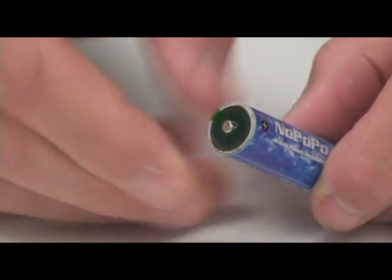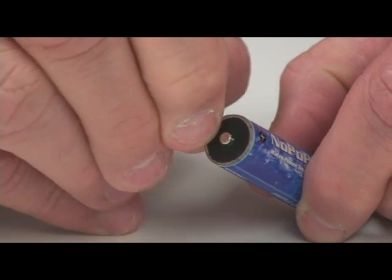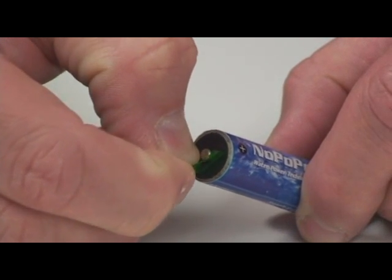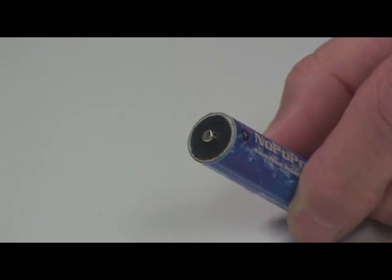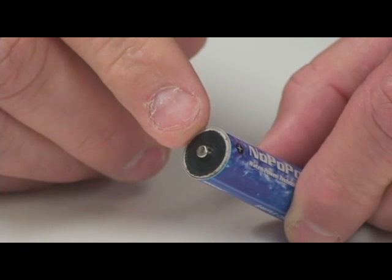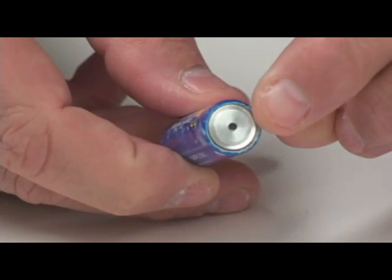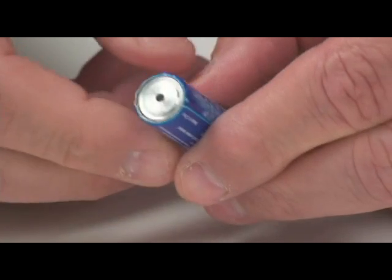On the top you'll notice that there is a little small green seal, and you must remove this green seal before use. Removing this green seal will expose a very small vent hole, and through this vent hole is where the air will escape while you put the liquid in the bottom of the battery.